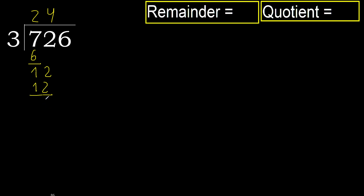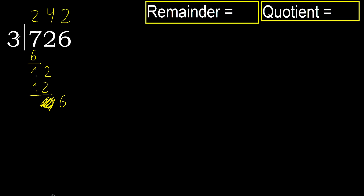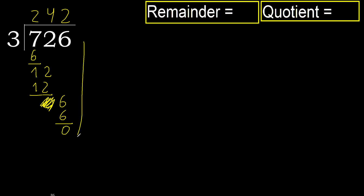Subtract. Next. Eliminate: 0. Ok. 6 — 3 multiplied by 2 is 6, which is not greater. Subtract. Next.